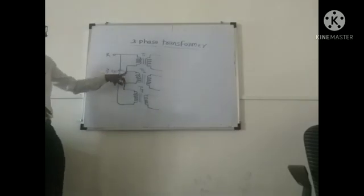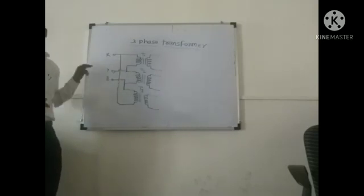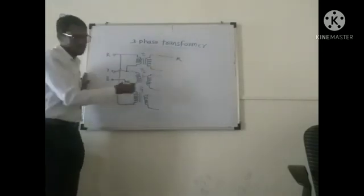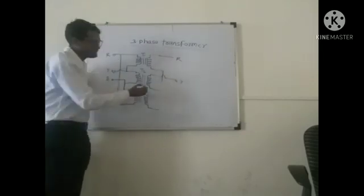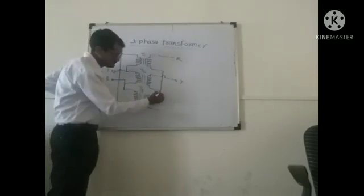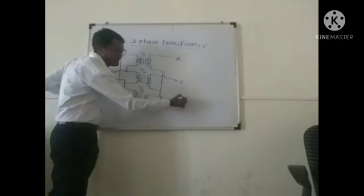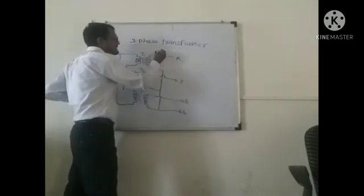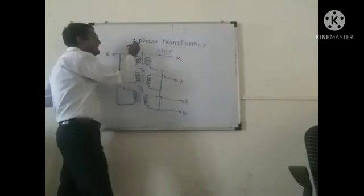This transformer is connected in delta format. The phases are R, Y, and B. The last point is our neutral point, which means this connection is star connected on the secondary side, and the primary side is delta connected.